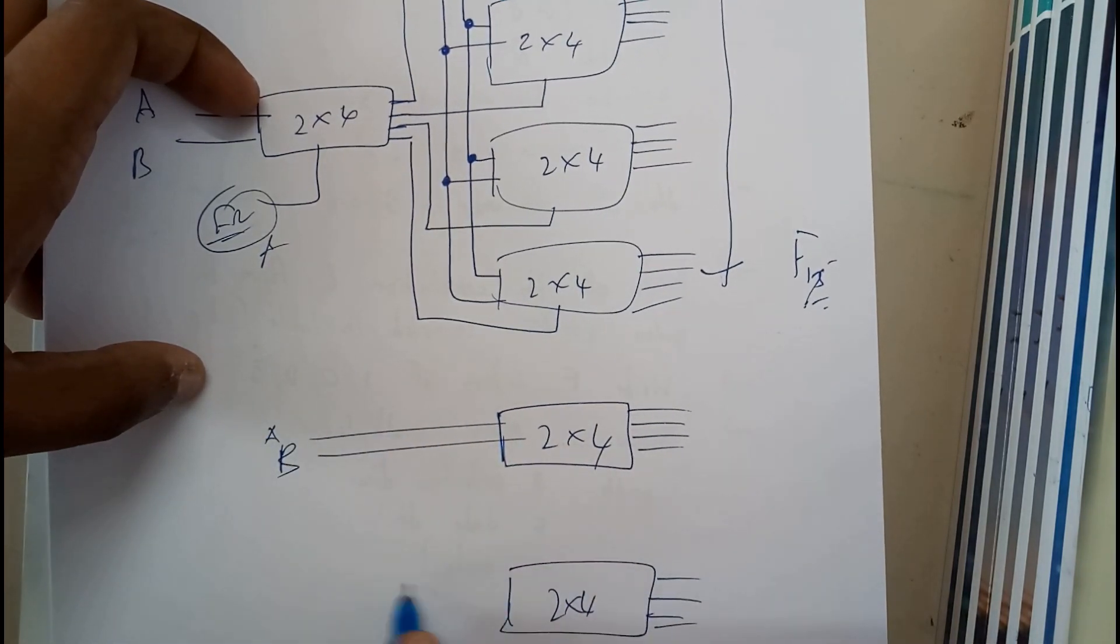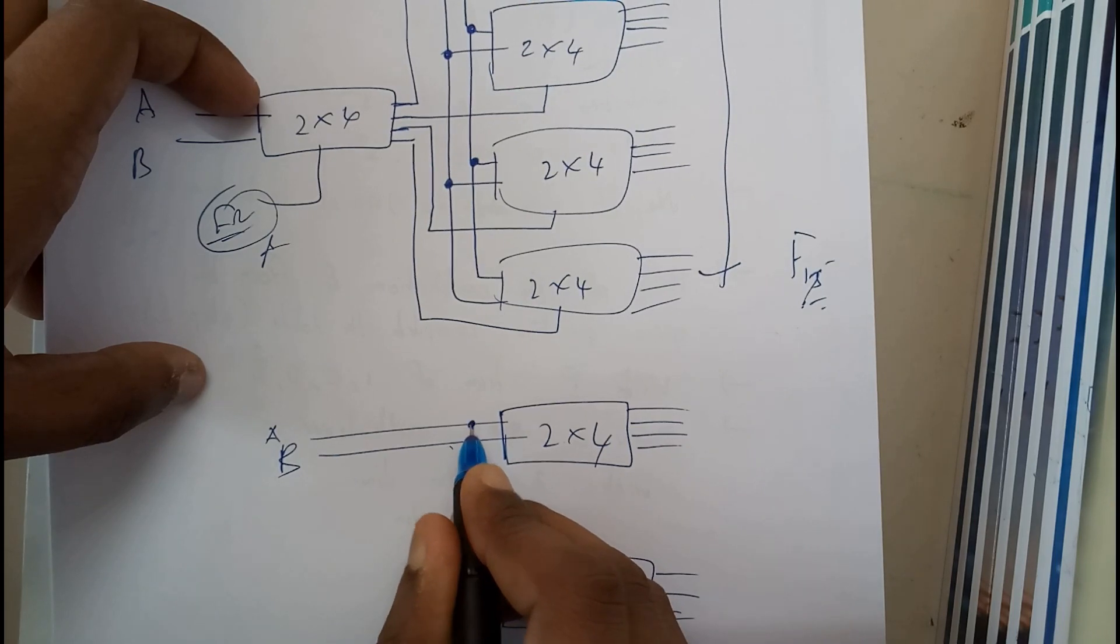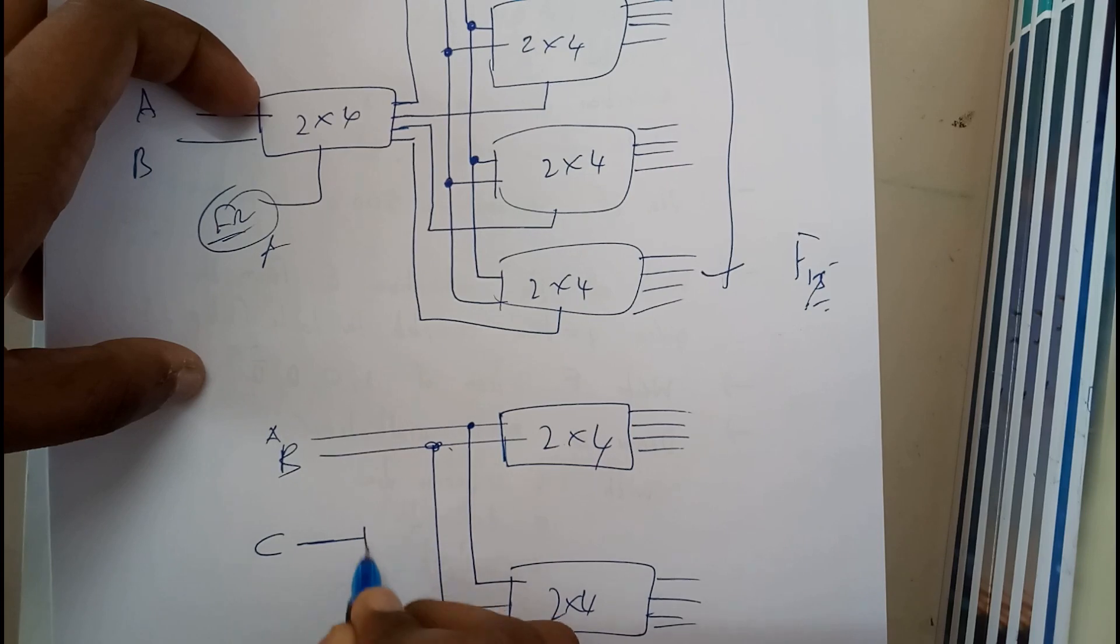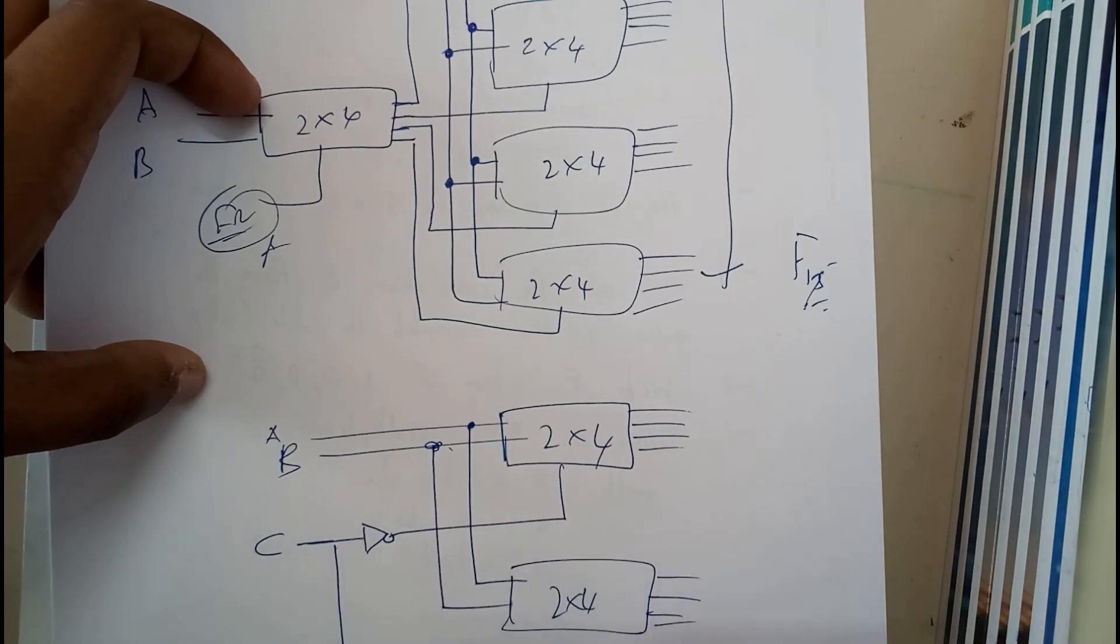I'll be giving A, B, A and B here. Similarly, I'll be just dragging these only so the diagram will be a bit clean. So C will be my enable. I'll be giving NOT for this and normal for this.